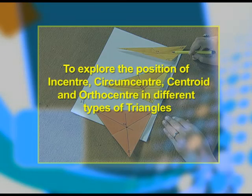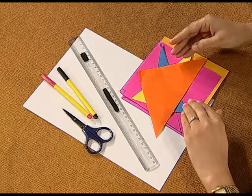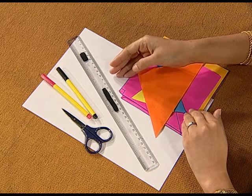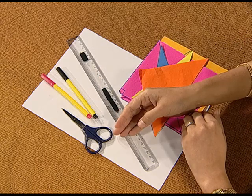Dear students, in Geometry, we study about various shapes. In triangles, we study about terms like incenter, circumcenter, centroid, and orthocenter. Today, we are going to explore the position of incenter, circumcenter, centroid, and orthocenter in different types of triangles. For doing this activity, we require the following materials: some colored papers, a ruler, sketch pens, and a pair of scissors.